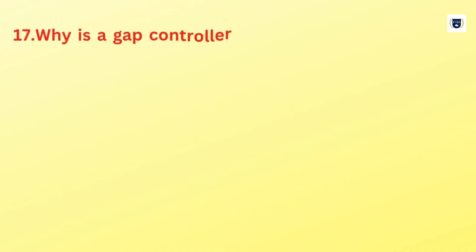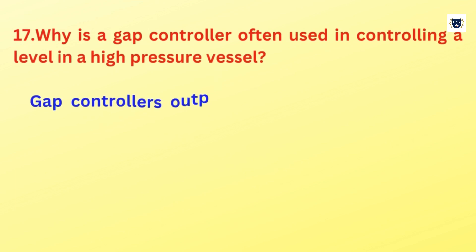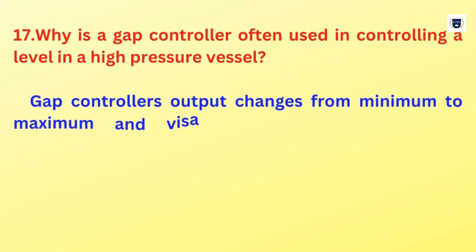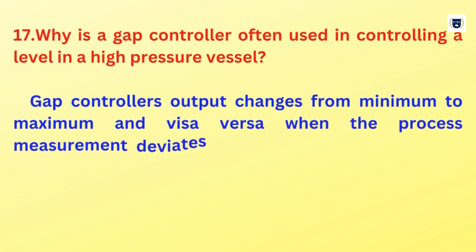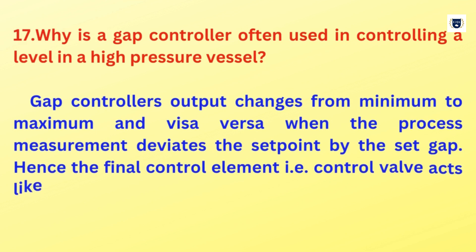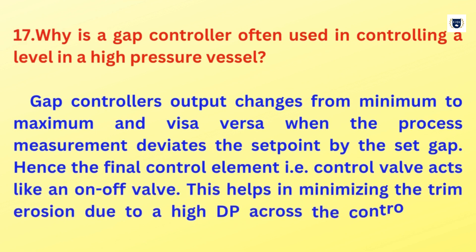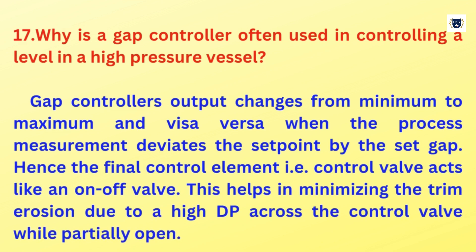Why is a gap controller often used in controlling a level in a high-pressure vessel? A gap controller's output changes from minimum to maximum and vice versa when the process measurement deviates from the set point by the set gap. Hence the final control element, i.e., the control valve, acts like an on-off valve. This helps in minimizing the trim erosion due to high differential pressure across the control valve while partially open.